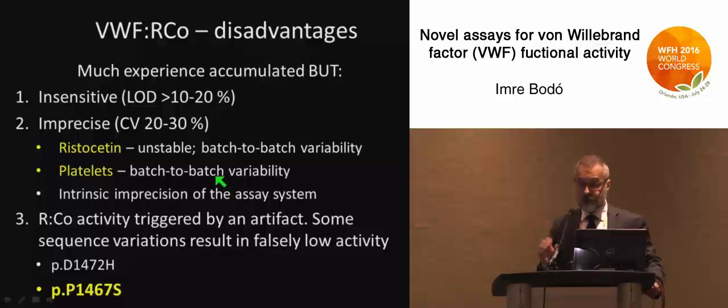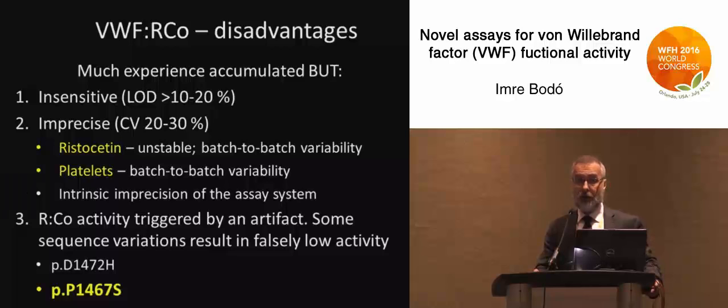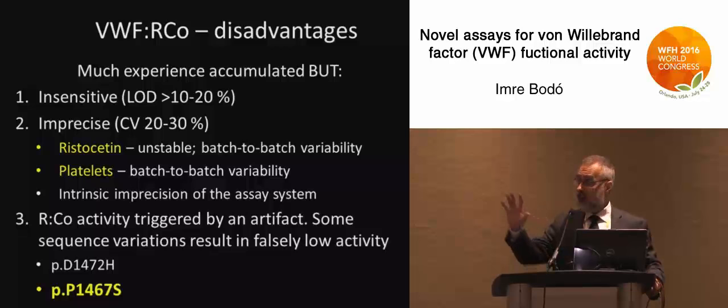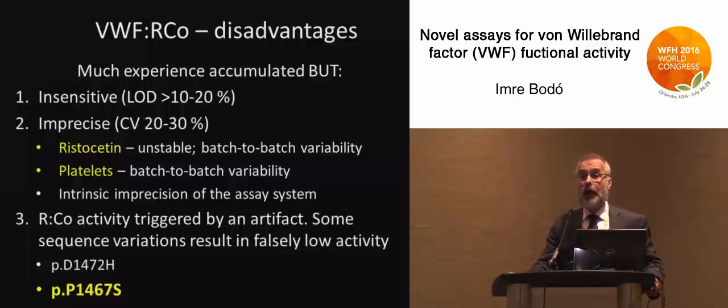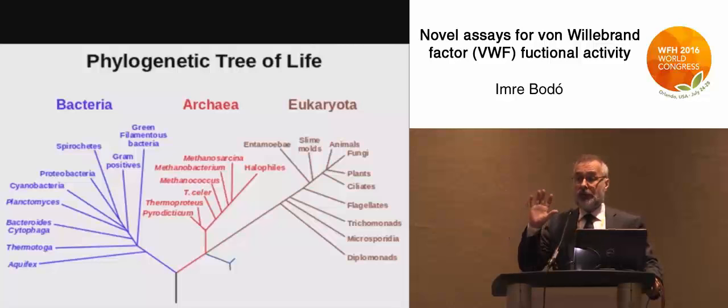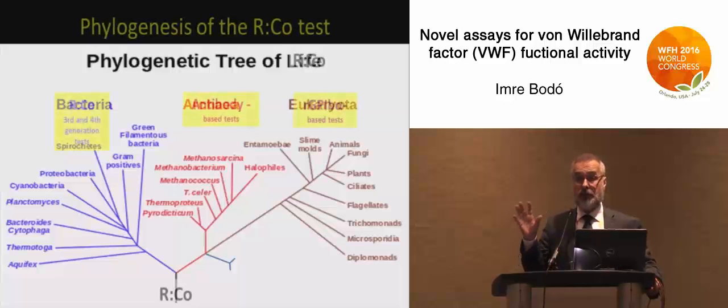Not surprisingly, several genetic variations were found that affect the ristocetin binding site on the protein, giving a falsely low ristocetin cofactor activity, whereas these patients do not bleed. Their von Willebrand factor in vivo is physiologically completely normal. Highlighted is the proline-1467 serine substitution — remember that number, it will come up again. This is not an insignificant problem; in certain populations such as African Americans, these variations affect more than half of the population. So what do you do with an assay that is falsely wrong in half of the population?